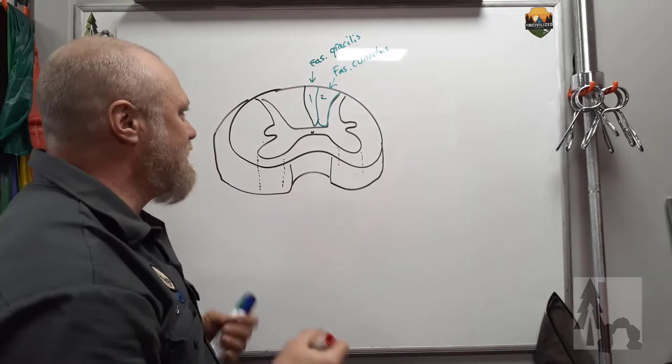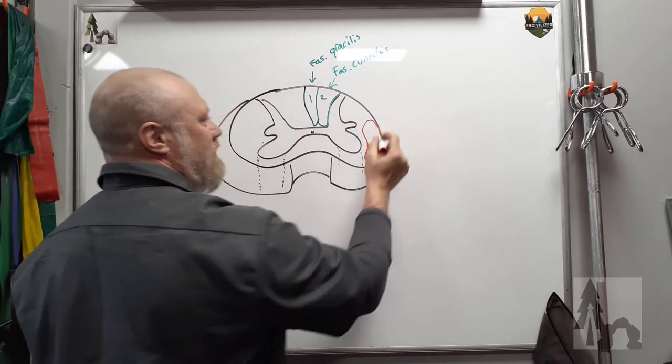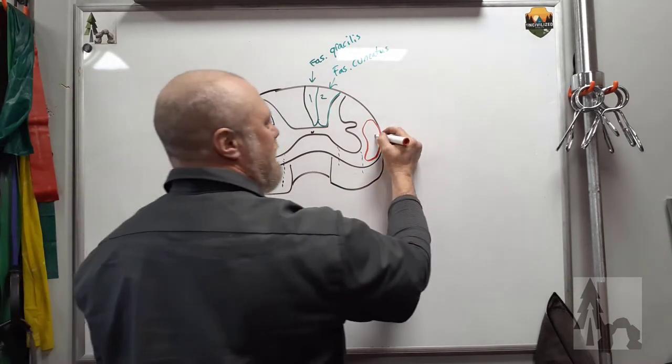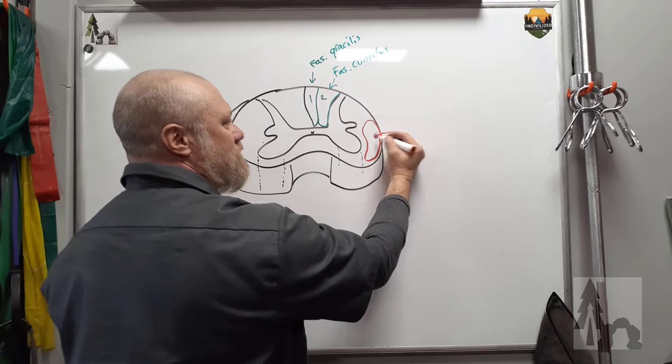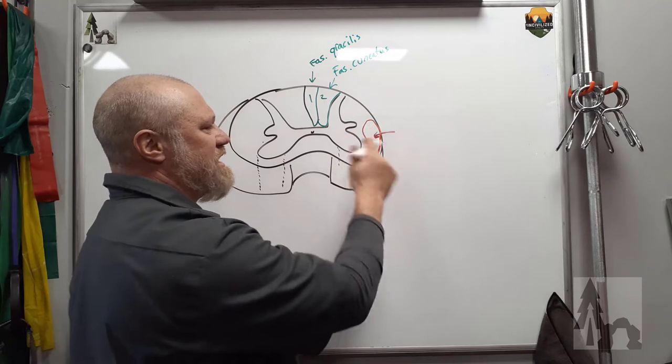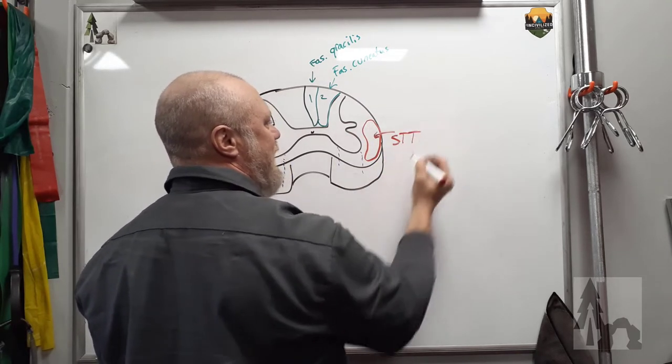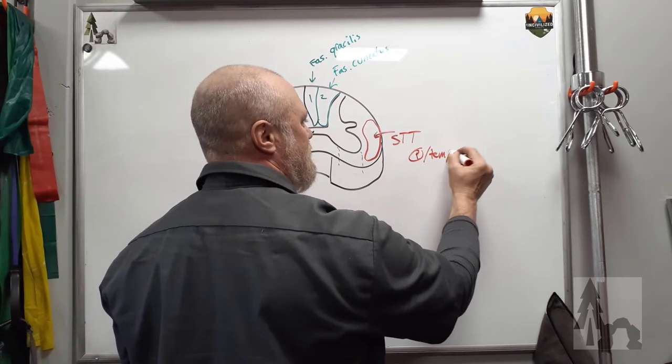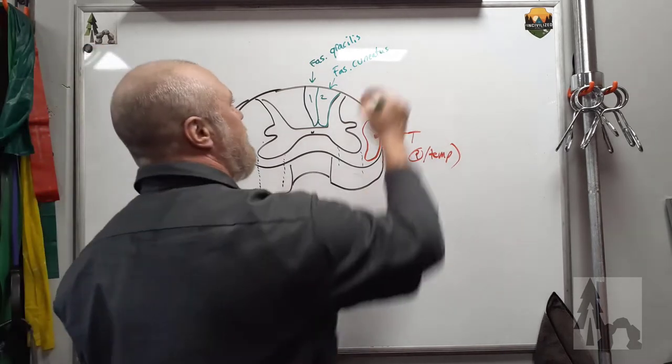Another tract that's going to ascend is going to be over here and include a large portion of the anterolateral part of the white matter. And this is the anterolateral system. It's going to contain spinotectal, spinocerebellar, spinobulbar, lots of things in here. But mainly, it's going to contain the spinothalamic tract. Spinothalamic tract would be your pain and temperature sensation that gets conveyed up to the brain.